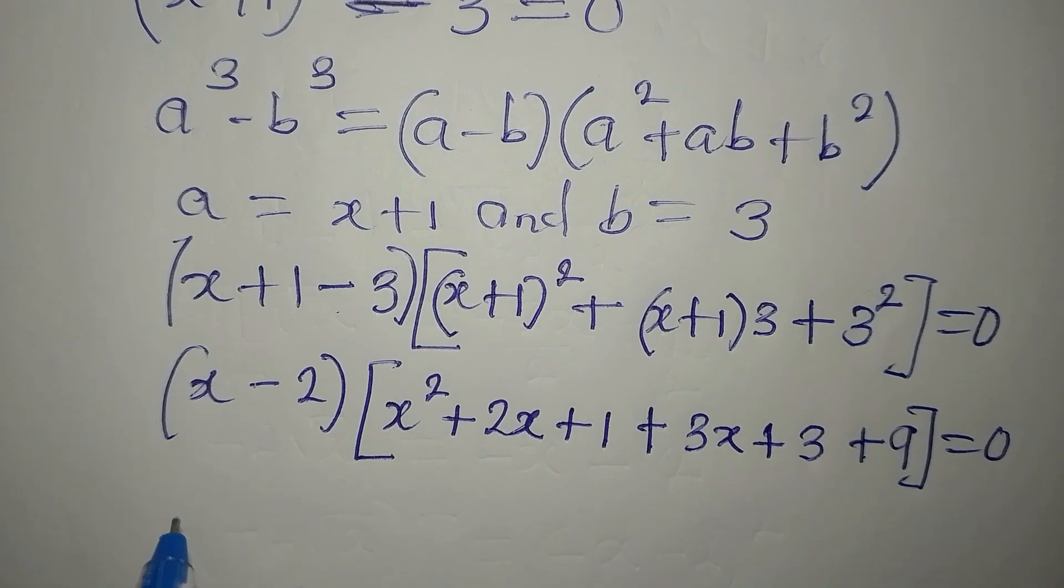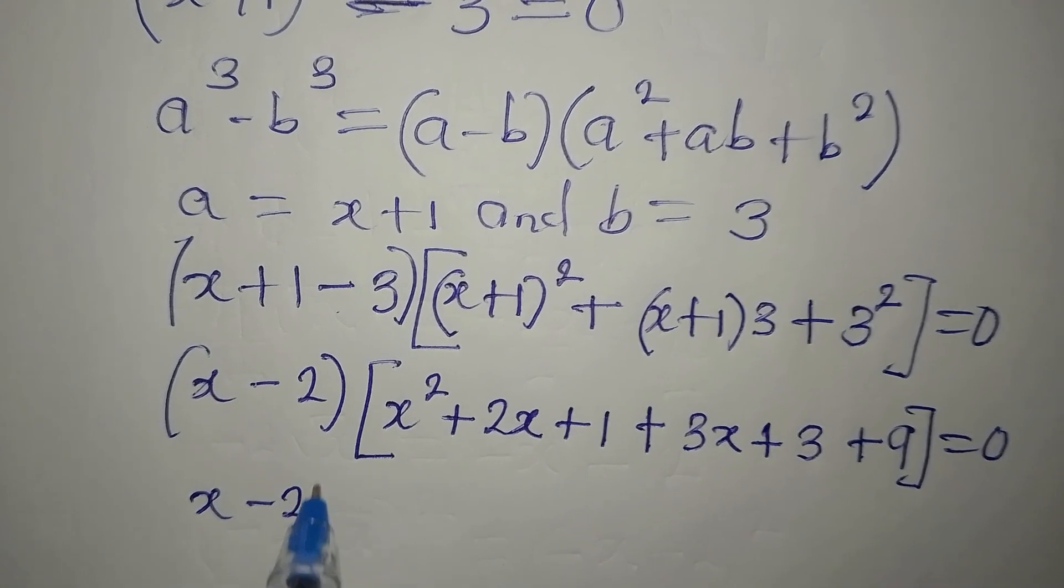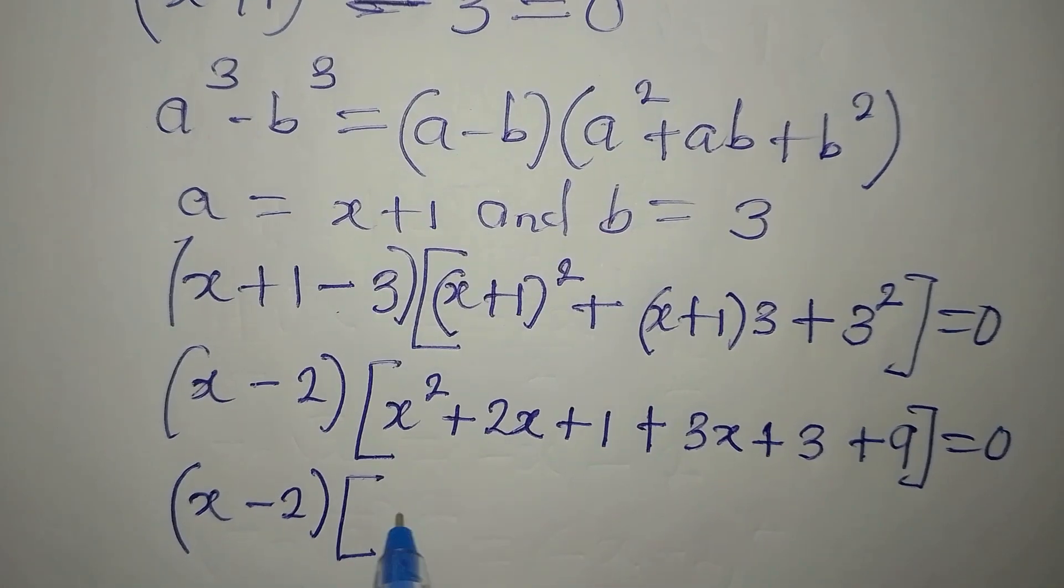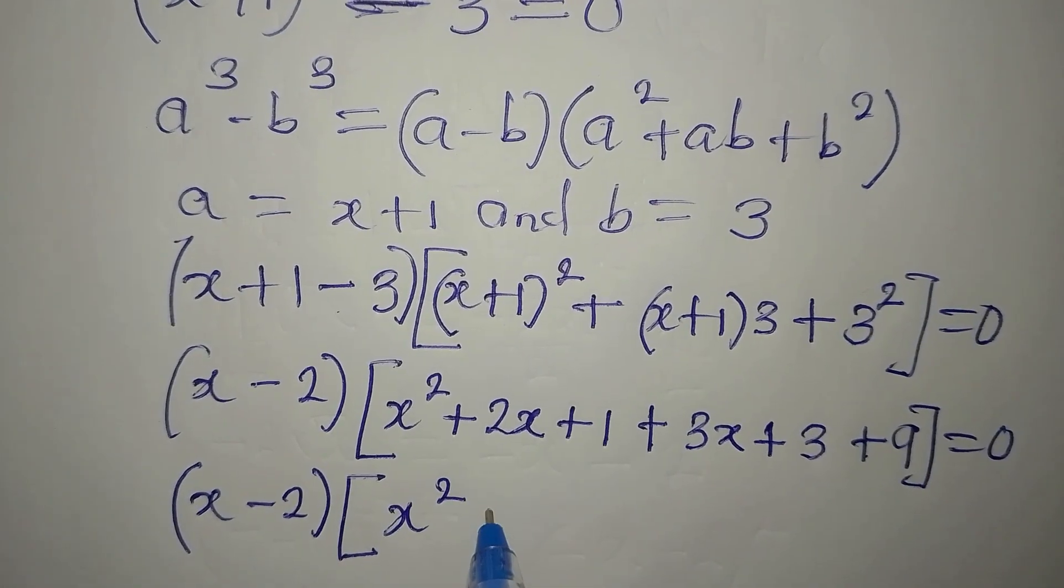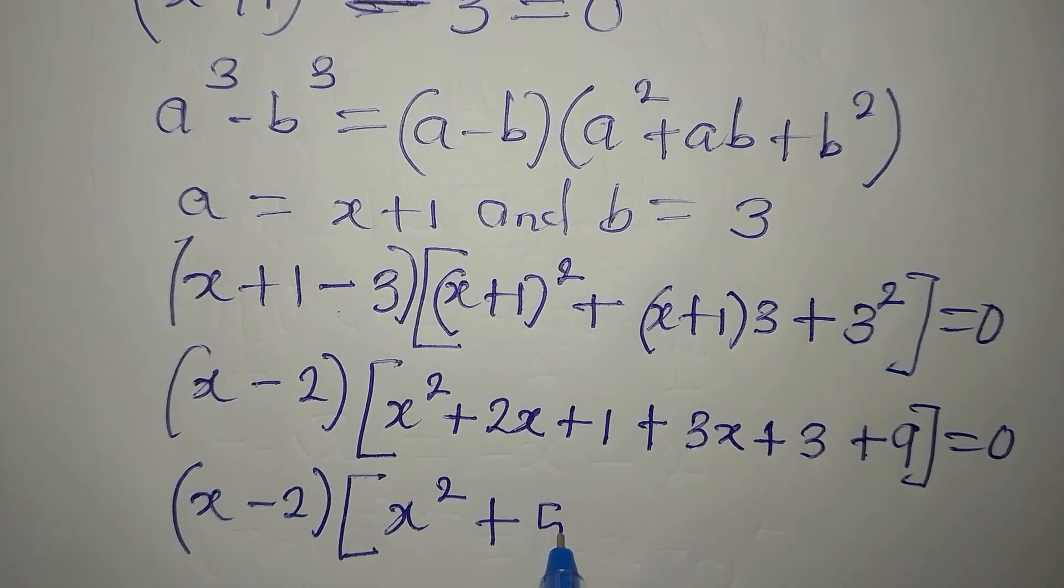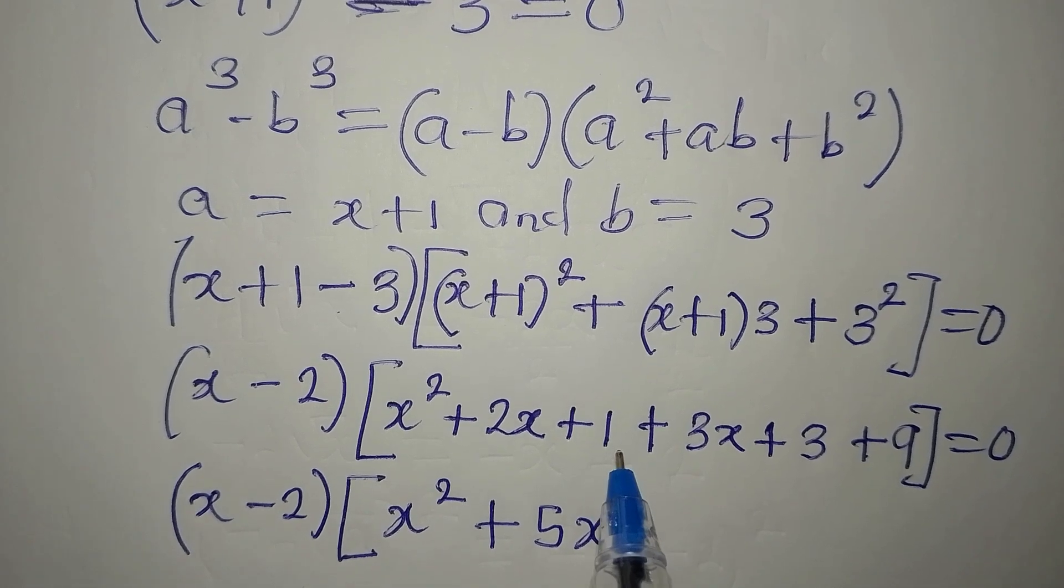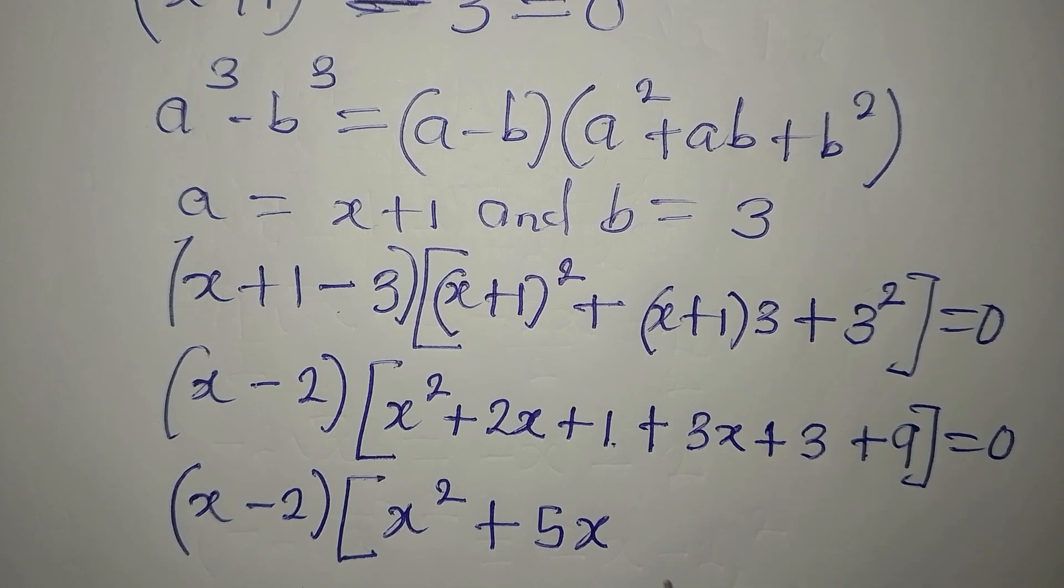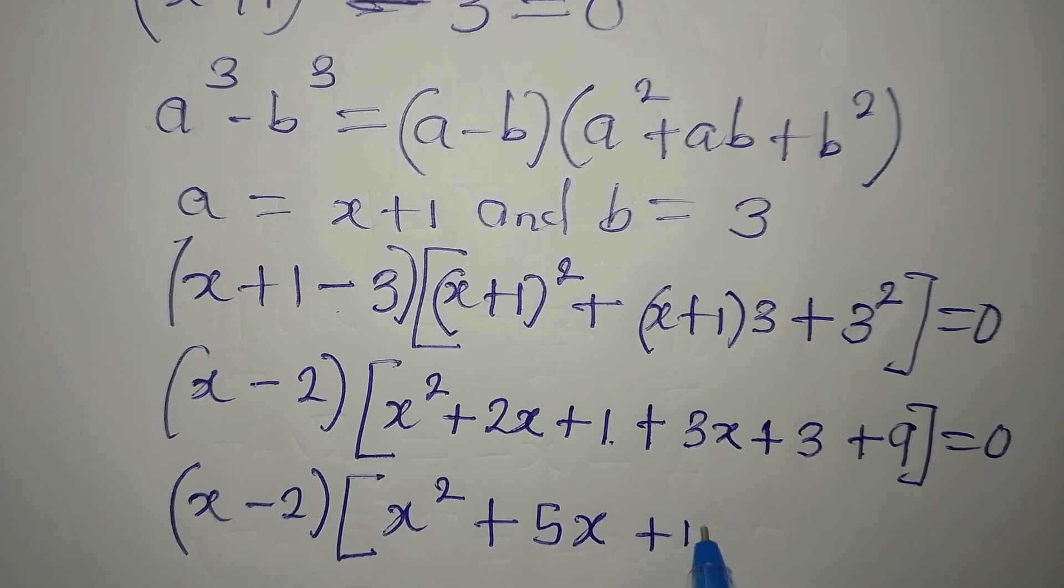Now we have x minus 2, the common factor. Then here we have x squared plus 2x plus 3x, that will give us 5x. 1 plus 3, that is 4. 4 plus 9, that is 13. So we have plus 13 here.